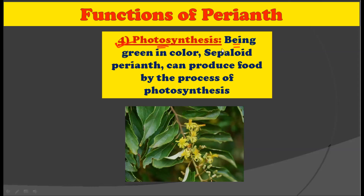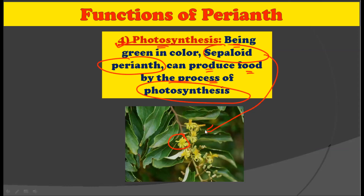The fourth function performed by the Perianth is photosynthesis. Being green in color, the sepaloid Perianth can produce food by the process of photosynthesis. The sepaloid Perianth is always green in color, and this green color is due to the presence of chlorophyll pigment, which is responsible for the process of photosynthesis in which food is prepared by the plants.